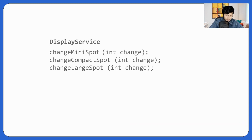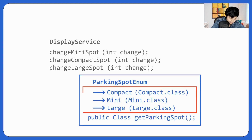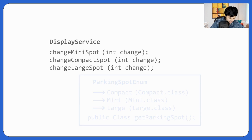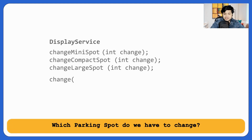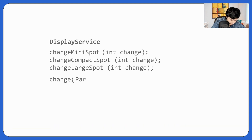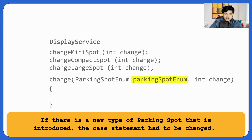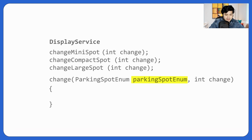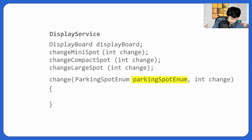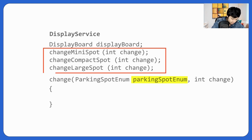We can optimize this. Since we already have a parking spot enum with compact, mini, and large values, let's make a single function `change` that takes the parking spot enum and an int change. We check which parking spot enum it is and do the update. Display board should be a data member of display service. This reduces our code from three large functions to just one method.